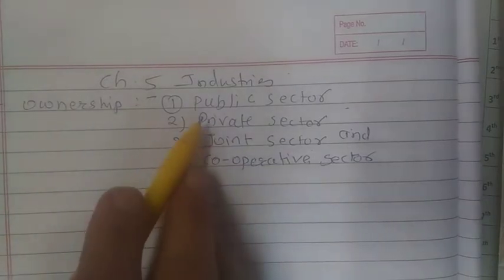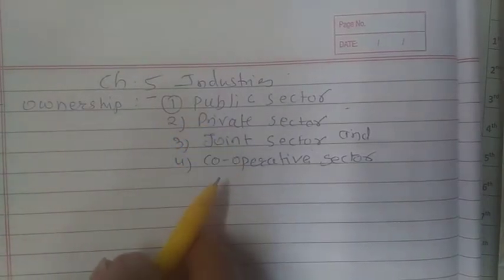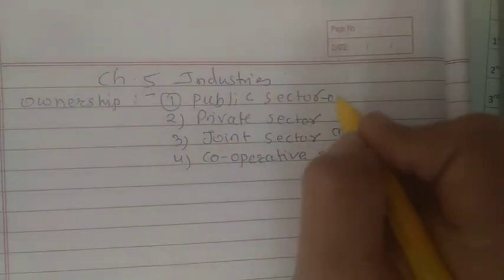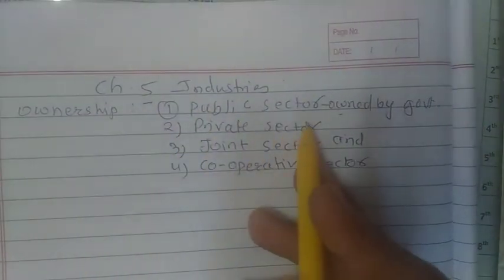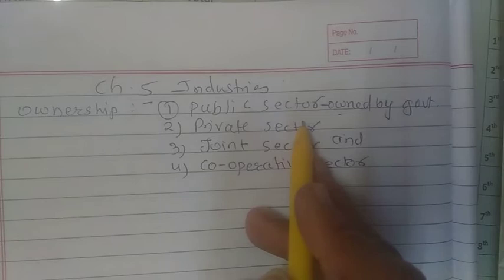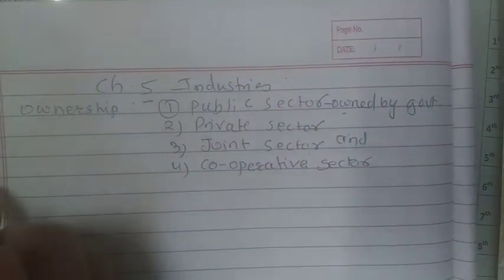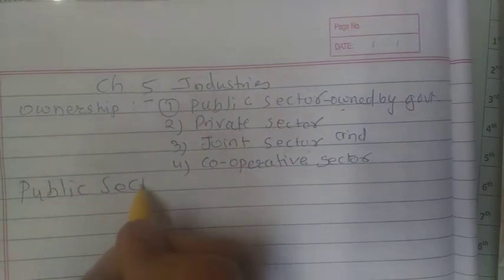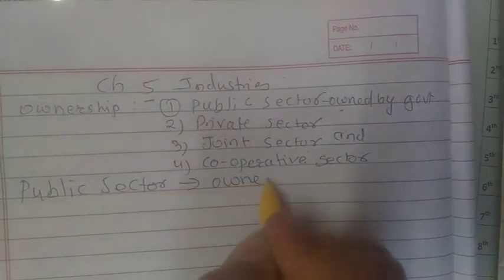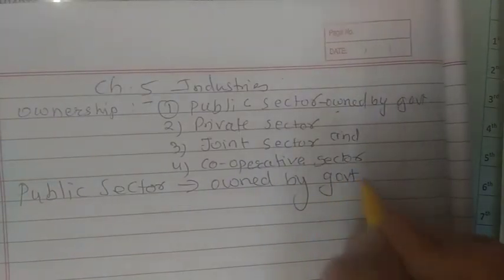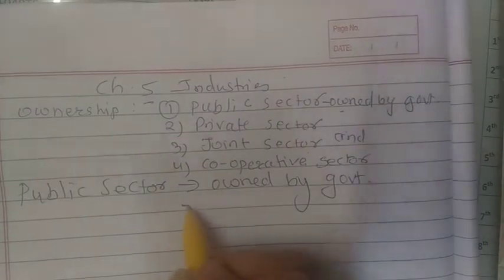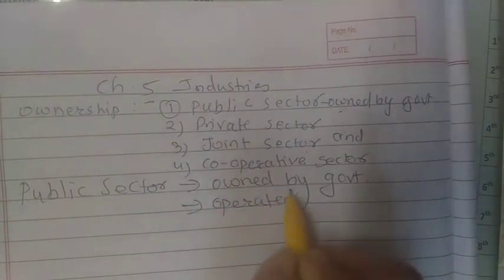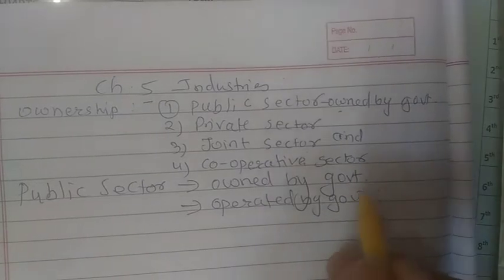First we see the public sector. Public sector industries are owned and operated by the government. They are owned by the government and operated by the government.